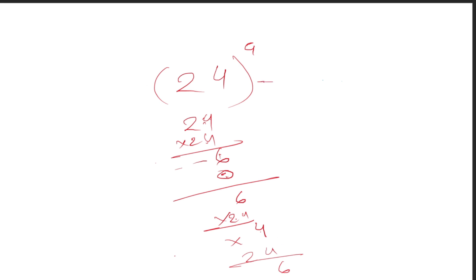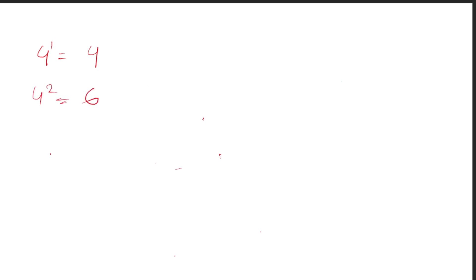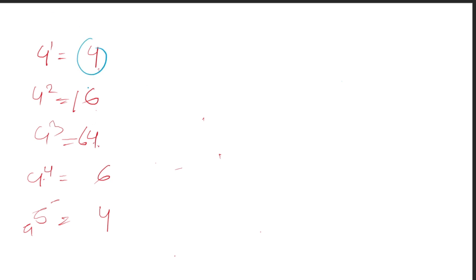So it is 3 and it is 4. Let's do this: 4 to the power 1 is 4. 4 squared is 6. 4 to the power 4 will be — take the word, it will show you what you should do. The same thing is 4, 6, 4, 6, 4, 6 — the pattern repeats. The pattern is: when the power is even, the unit digit is 6; when the power is odd, the unit digit is 4.